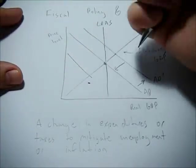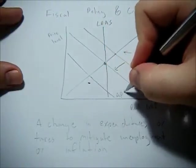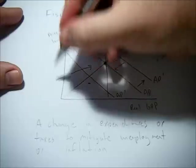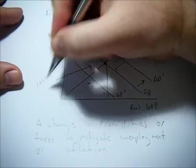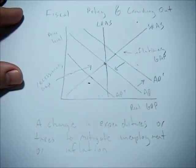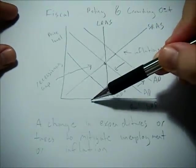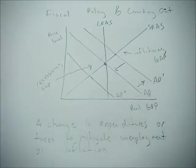It's also possible that we could be in a recessionary gap. So this gap right here would be called a recessionary gap, meaning that unemployment is too high, GDP is too low. We have to experience deflation to get back to long run equilibrium.